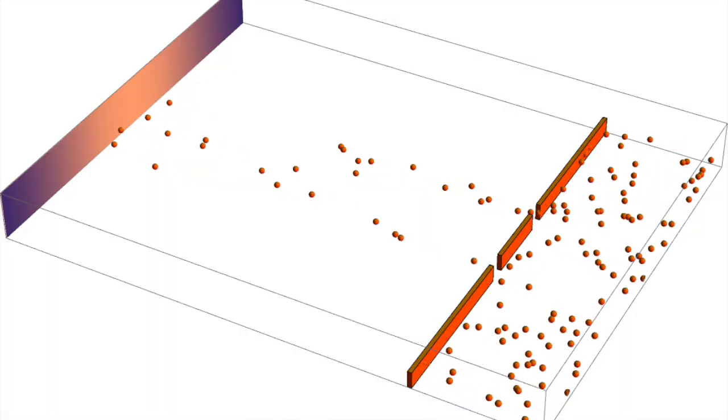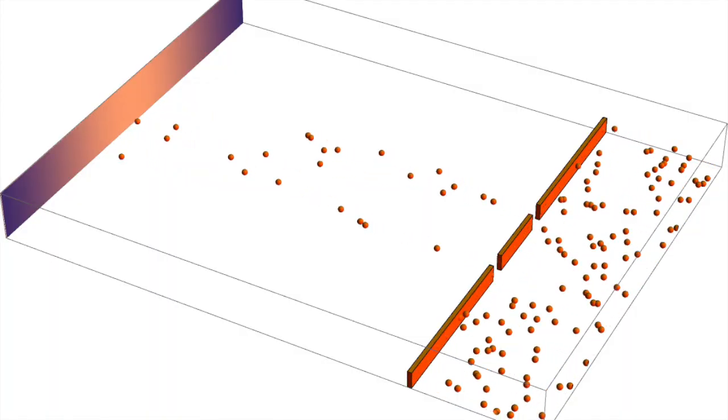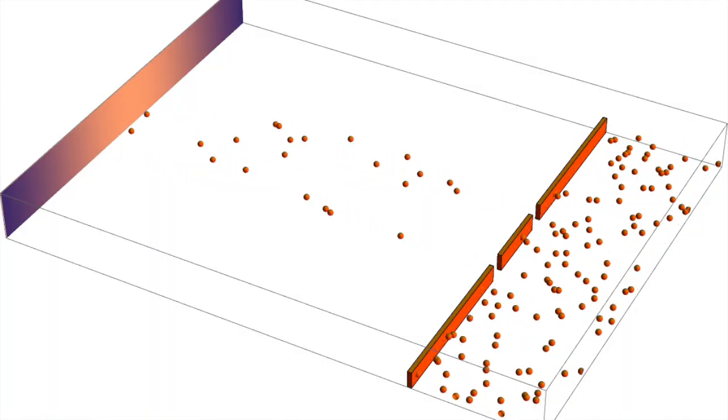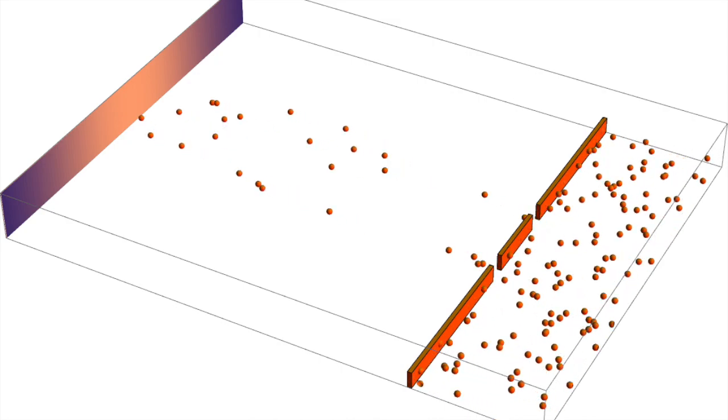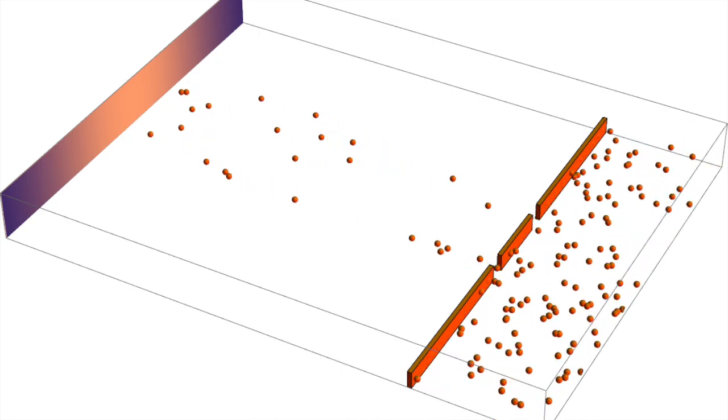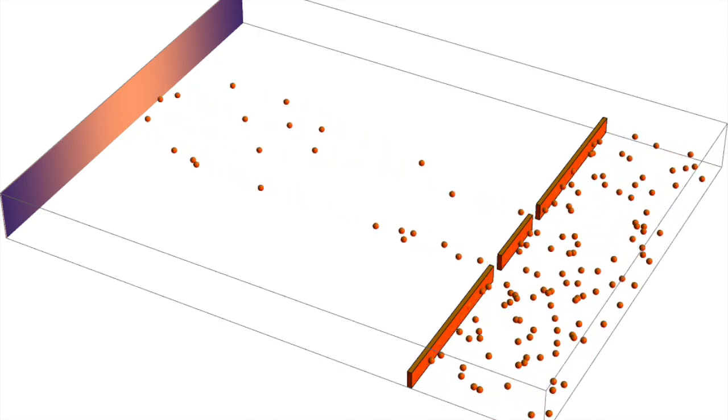However, when we observe the particles, they create an interference pattern, as if they were waves interfering with each other. The interference pattern is a series of bright and dark bands that result from the constructive and destructive interference of the waves that the particles represent.